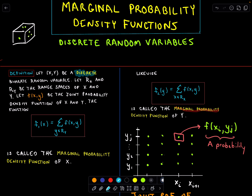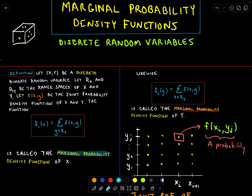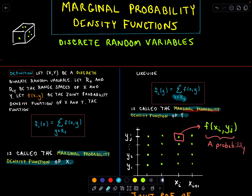We're just working with discrete random variables. So x and y are going to be two discrete random variables. R sub x and R sub y are going to be the range spaces of x and y, and we're going to have a corresponding joint probability density function f(x, y). The marginal probability density function of x, denoted f sub 1 of x, is obtained by summing up over all possible values of y. And likewise, if we sum up over all values of x and leave y fixed, that gives us the marginal probability density function of y.